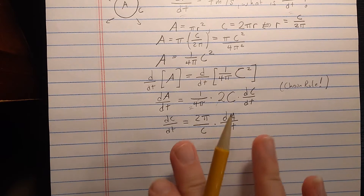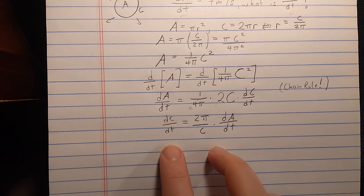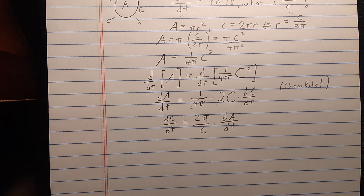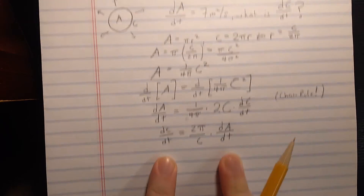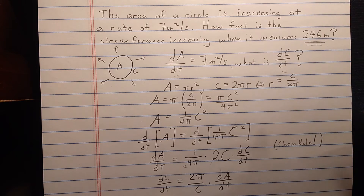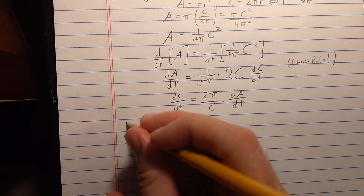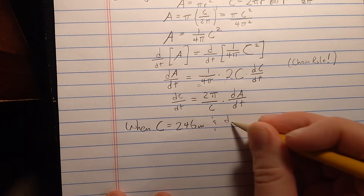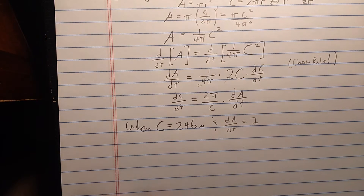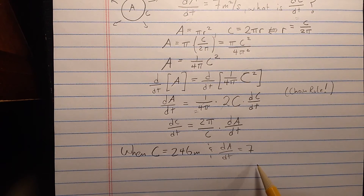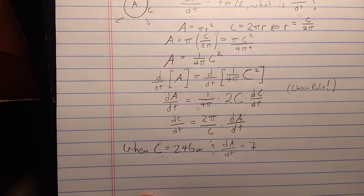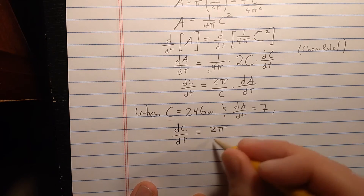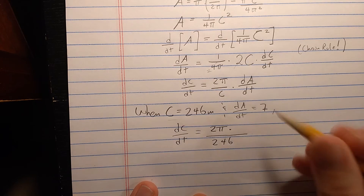There is a relationship between dC/dt and dA/dt — they're proportional, as long as the circumference is fixed. When the circumference changes, the relationship between the derivatives changes. So a critical part of this problem is that we only look at one particular time where there is a specific circumference. At the time when C equals 246 meters and dA/dt equals 7, we get dC/dt equals 2π over 246 times 7.